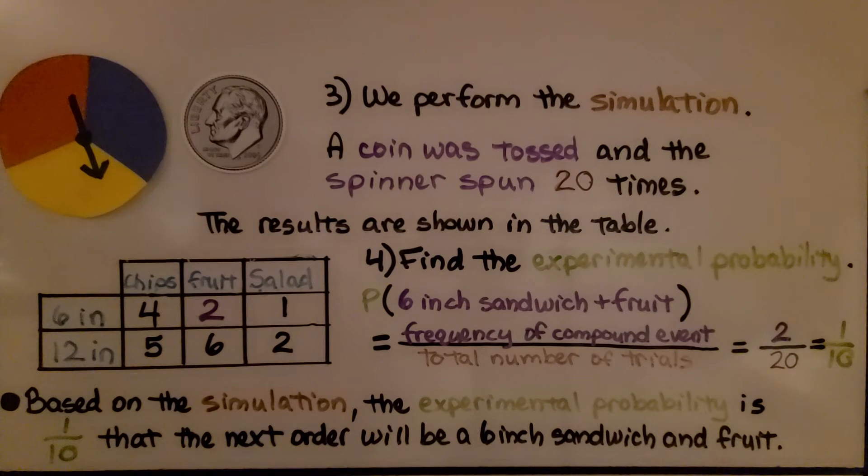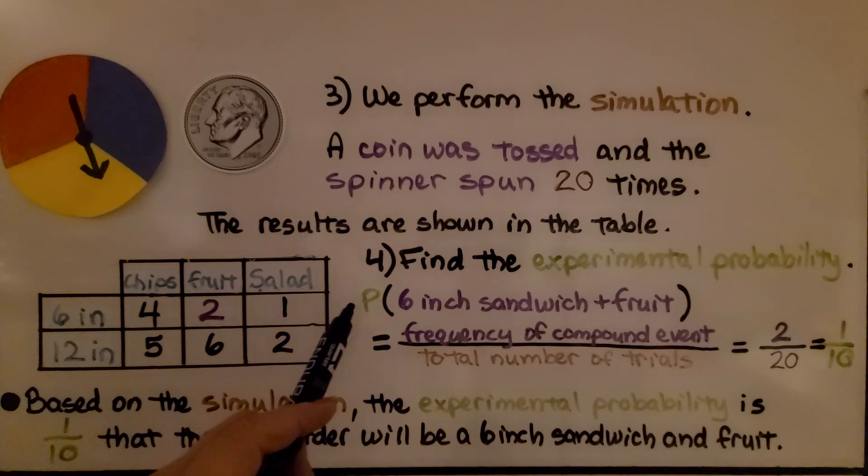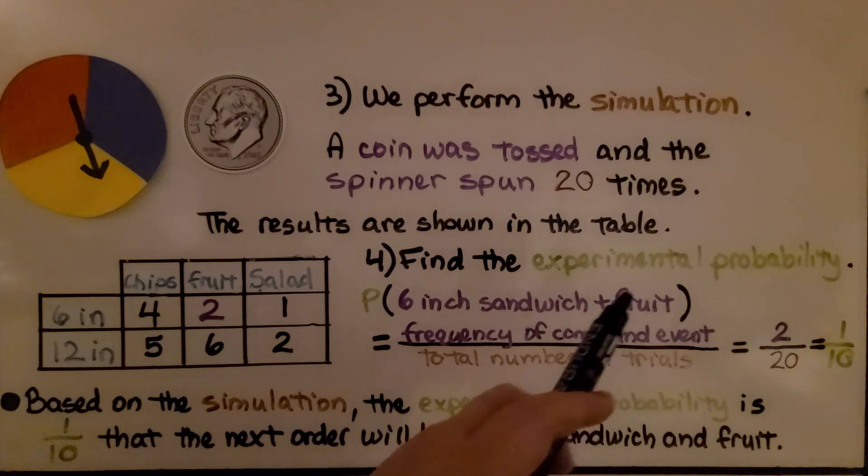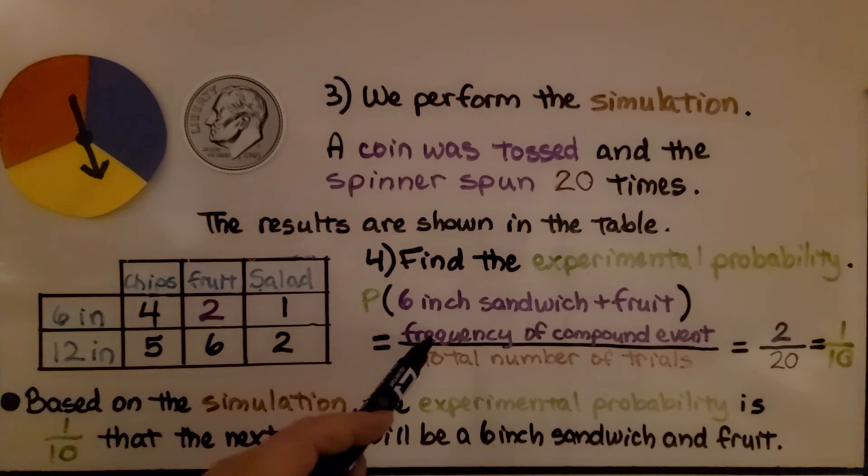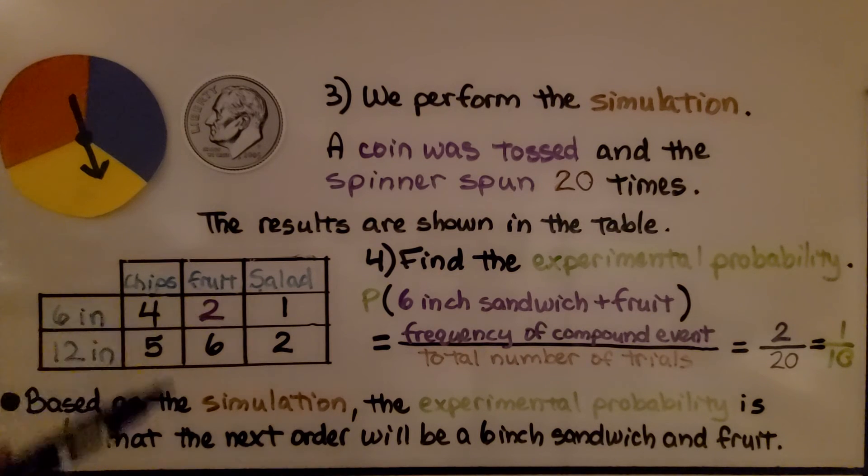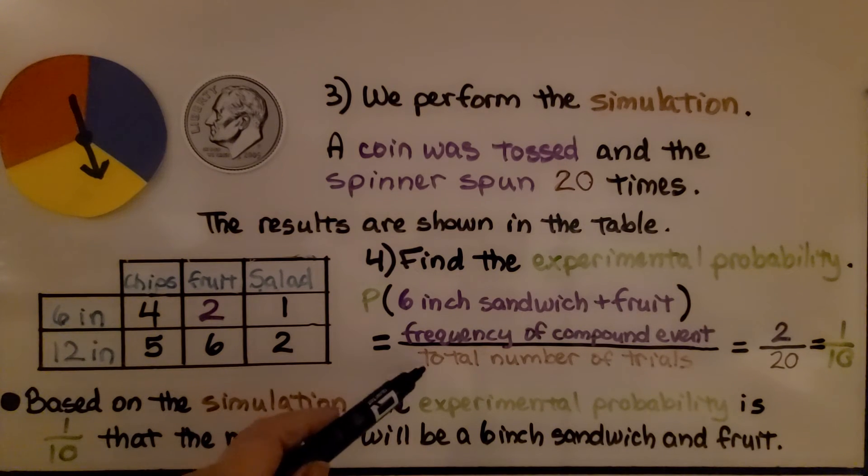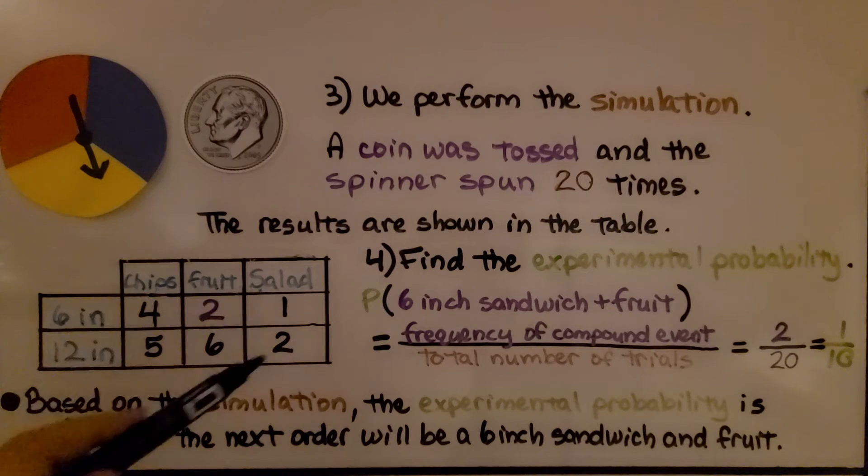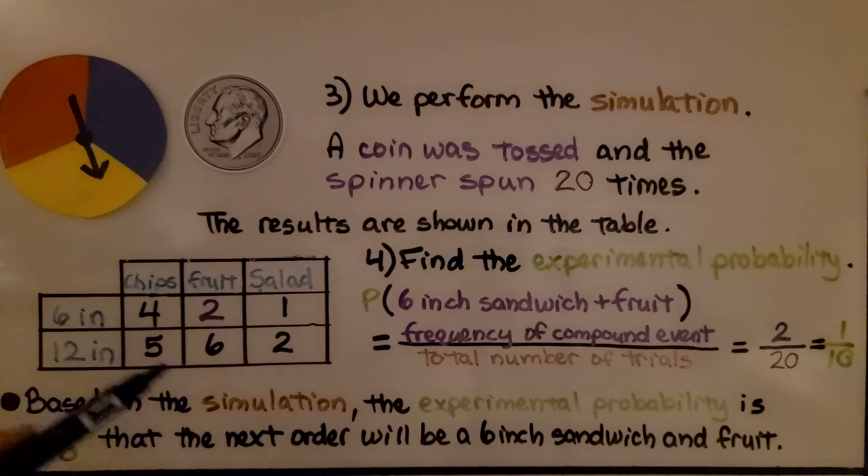Next, we perform the simulation. Let's say a coin was tossed and the spinner spun 20 times, and the results are shown in the table. Now we find the experimental probability. It's the probability of a 6-inch sandwich plus fruit. That's the frequency of the compound event, 2, over the total number of trials, which is 20.